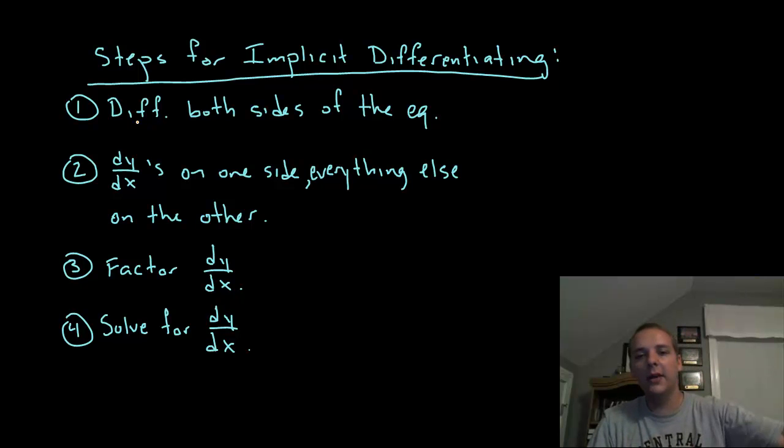Well, then on the left-hand side, every term on the left will have a dy/dx. That makes it a common factor. So you can factor the dy/dx out.